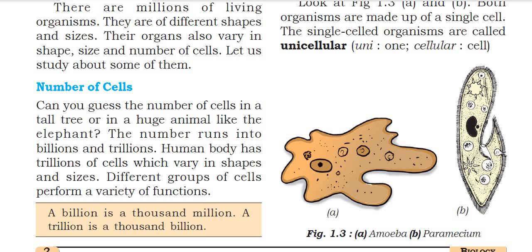A billion is a thousand million — so one thousand millions makes one billion. A trillion is a thousand billions — so a thousand billions makes one trillion. The human body has trillions of cells, a big elephant also has millions and trillions of cells, and a tall tree also has billions and millions of cells.